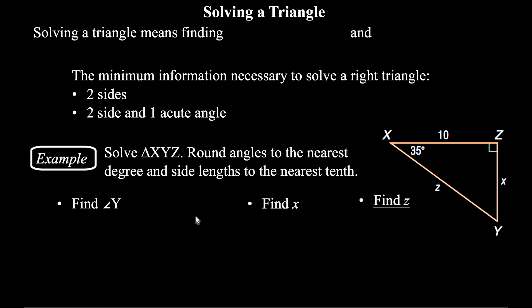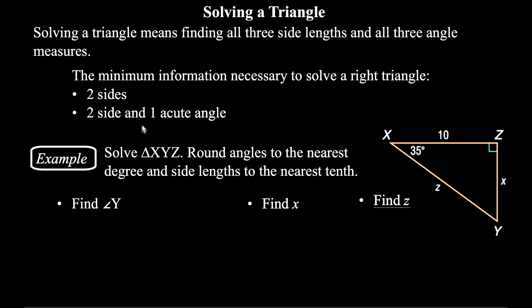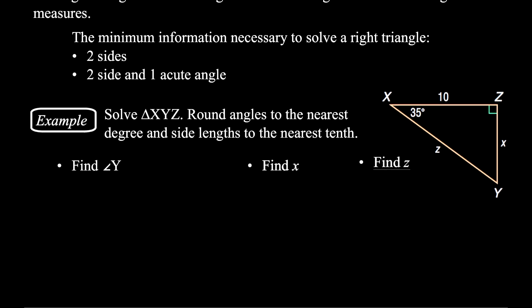In our last video I mentioned that we would be solving triangles. When we talk about solving a triangle, we mean finding the lengths of all of the sides and the measures of all of the angles. The minimum amount of information you need is at least two side lengths, or two sides and one of the acute angles. As long as you have that minimum information, you can solve the triangle.